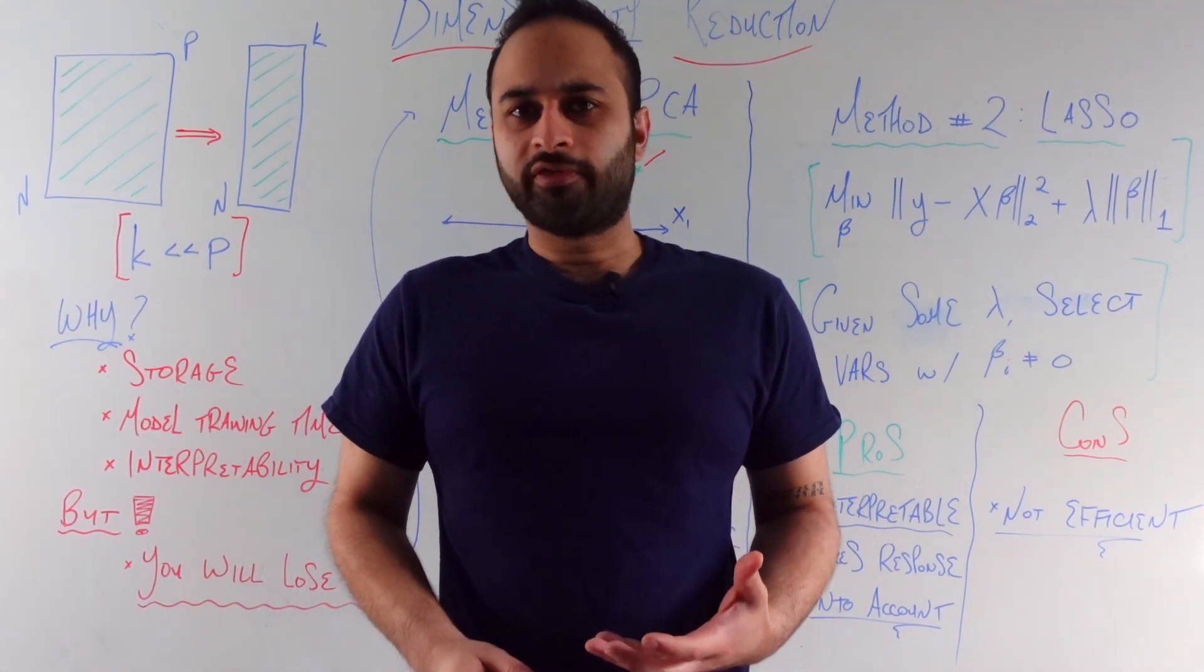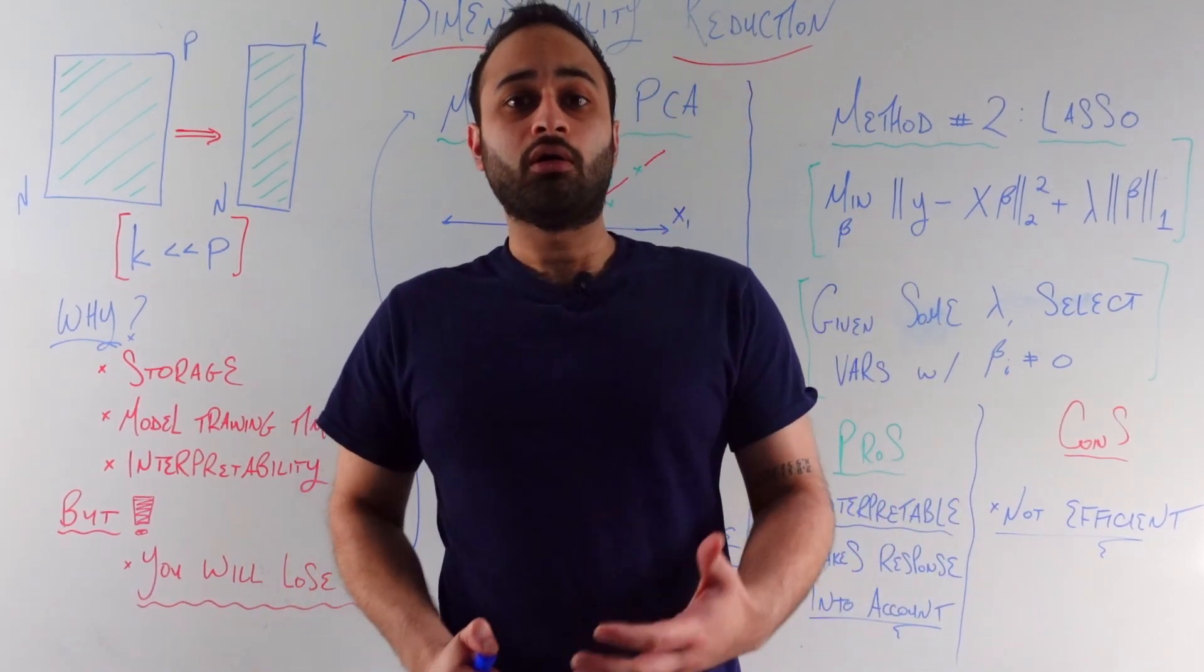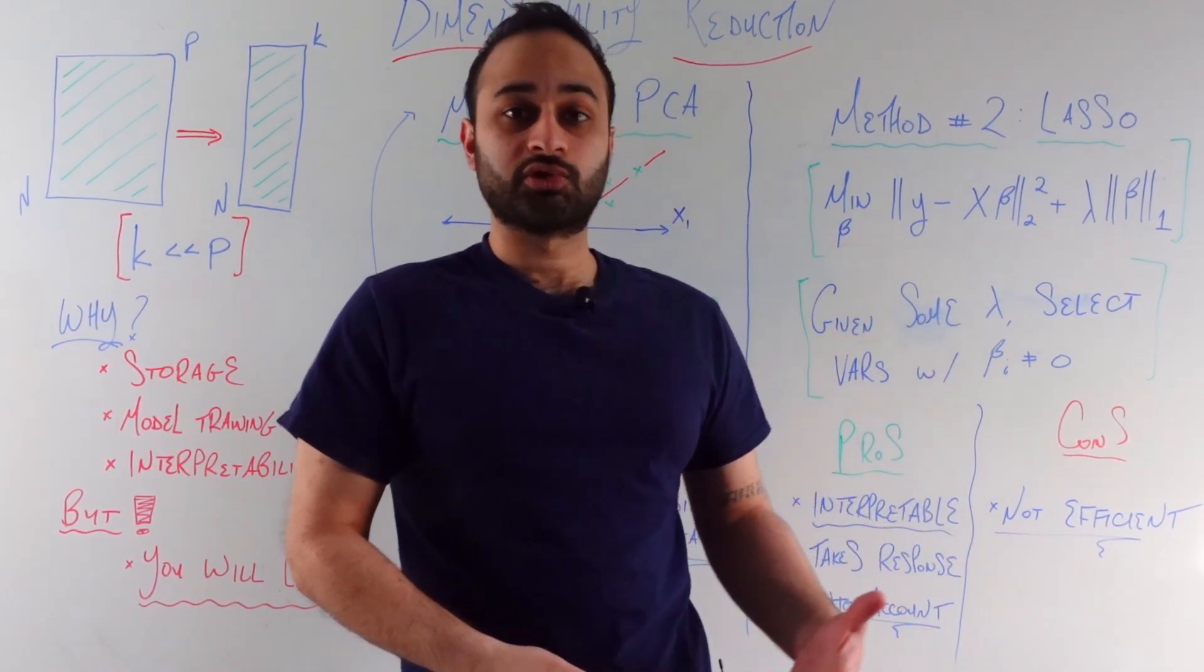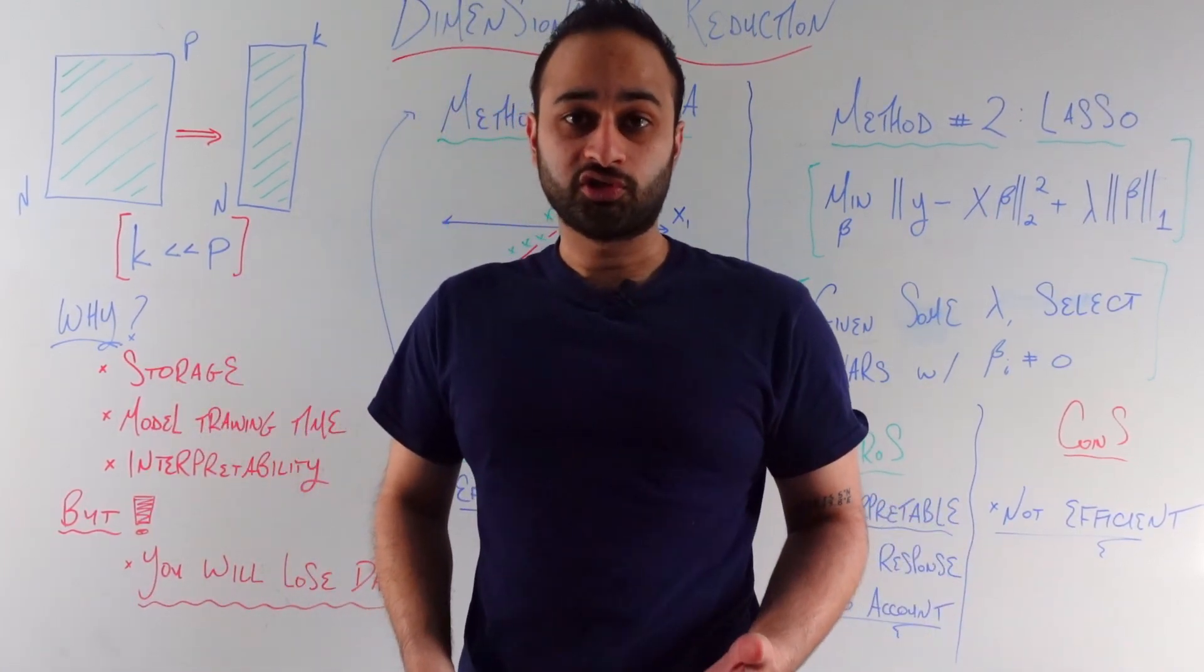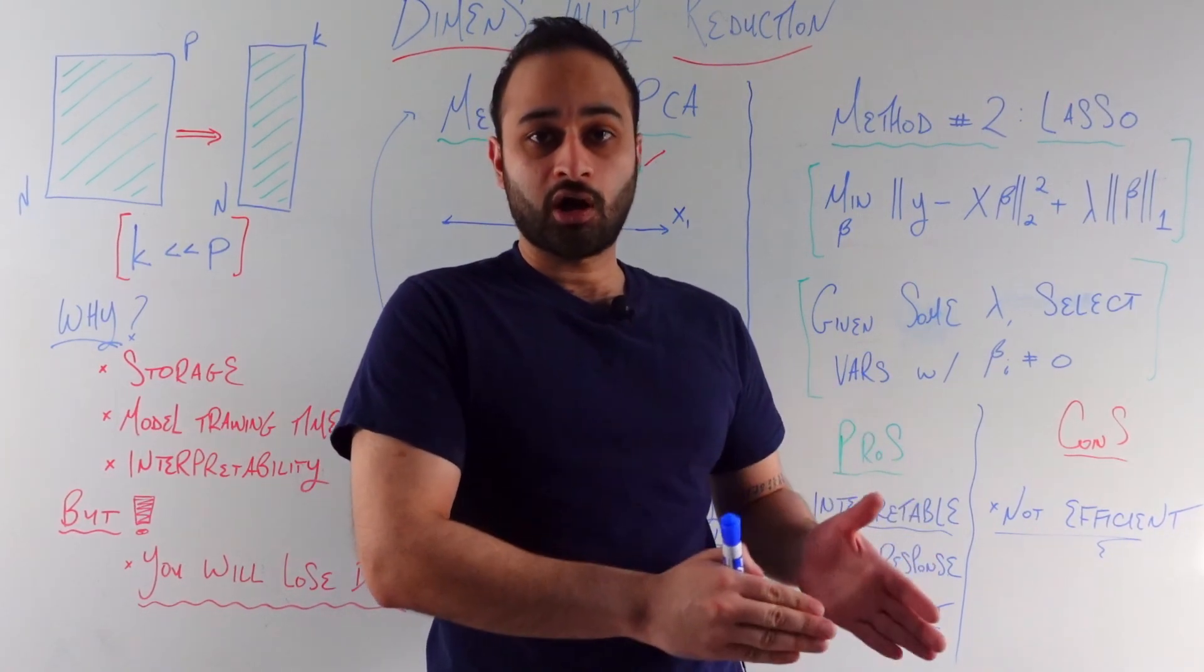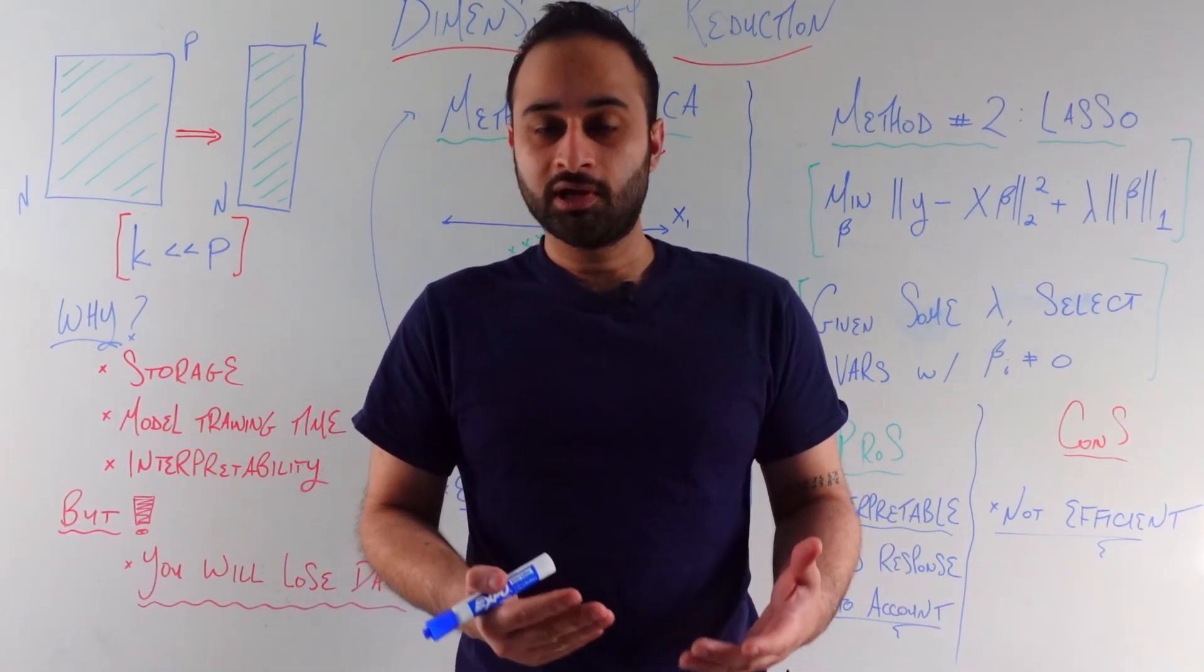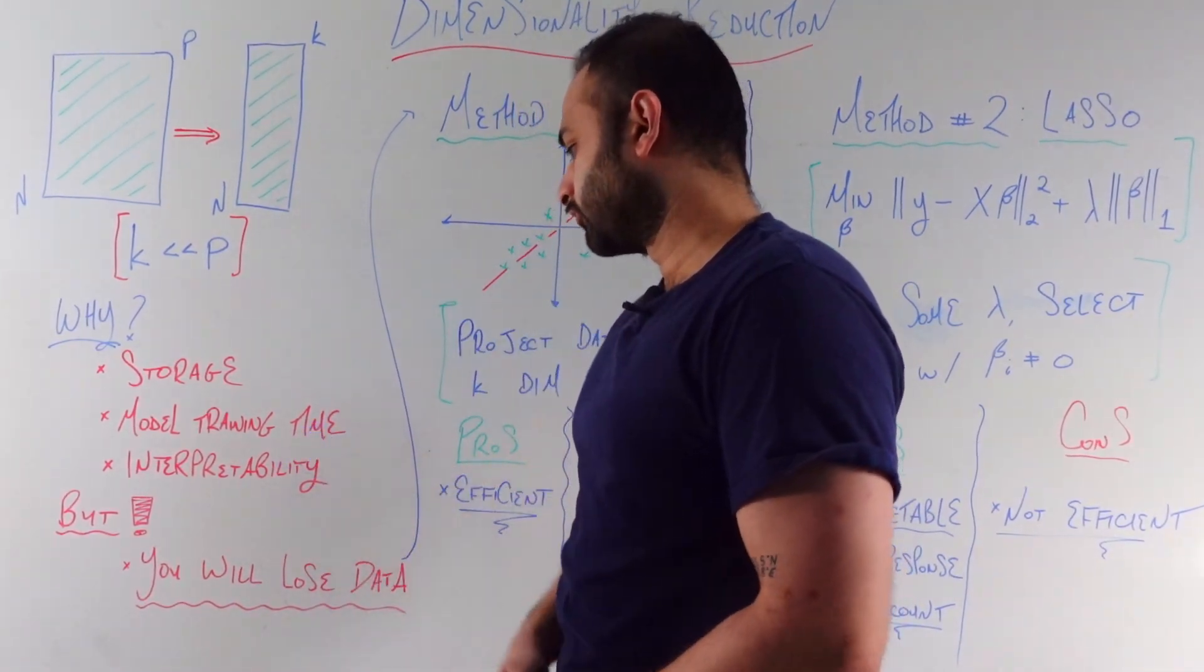And finally, maybe a lesser one but also one that's often overlooked, is interpretability. This is not going to be true in all dimensionality reduction techniques. As we'll see, one of the techniques does have this and one does not. But under certain situations, this actually helps you isolate some of the features or columns that you care the most about, and you can throw away the ones that are not very important.